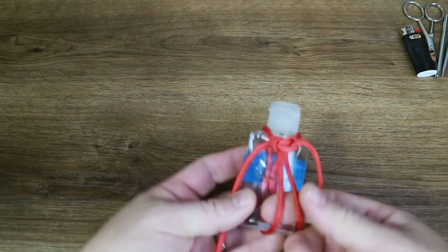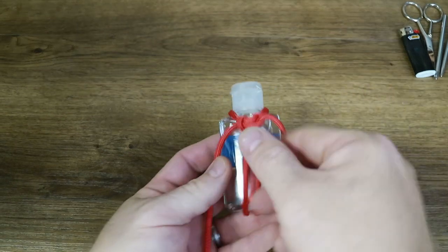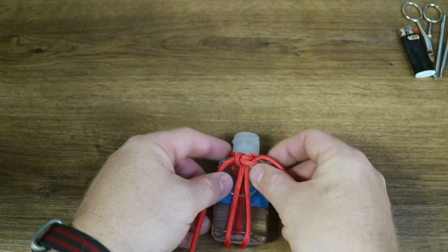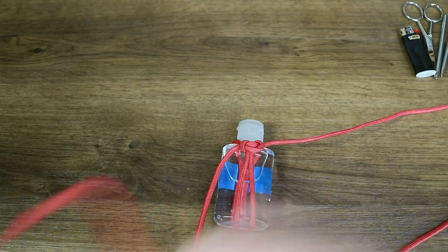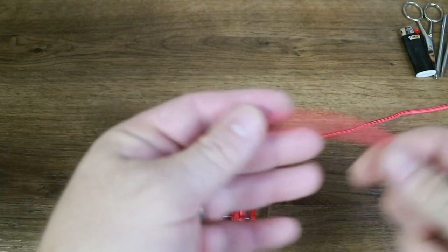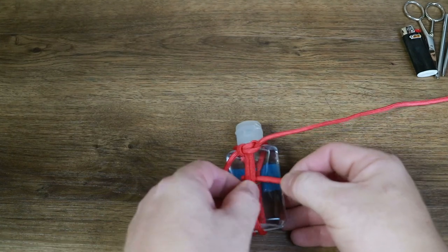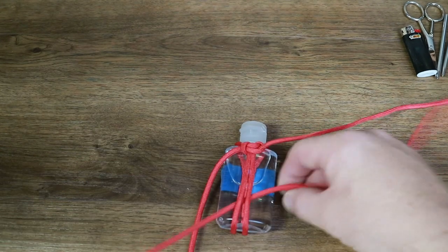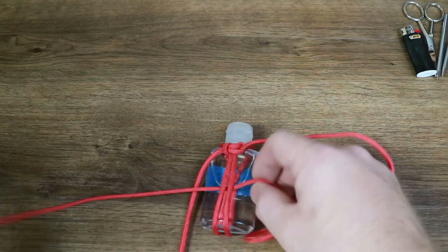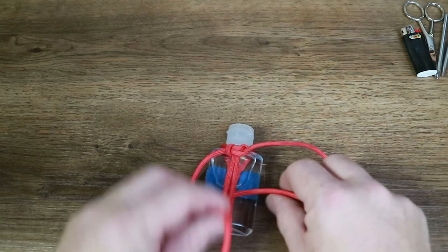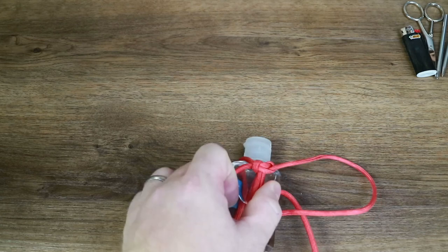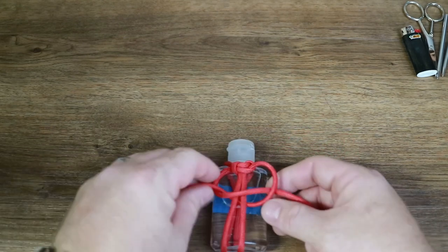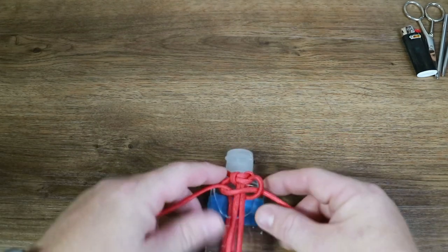Now we are going to do the same thing, except in reverse. If you always start on the same side, you'll end up with a spiral, which looks really cool, but won't work for this project. Taking the working end on the right side, run it behind the two cords and pull it through, leaving just a little loop. Run the left cord underneath this cord, over the top two cords, and through the loop on the right side. Cinch it down, but remember, not too tight.